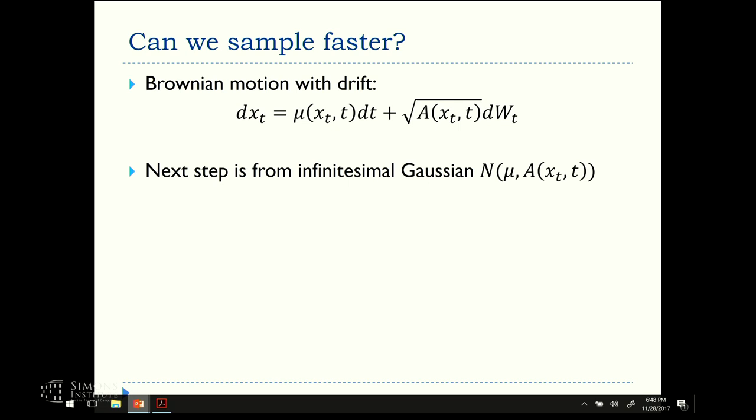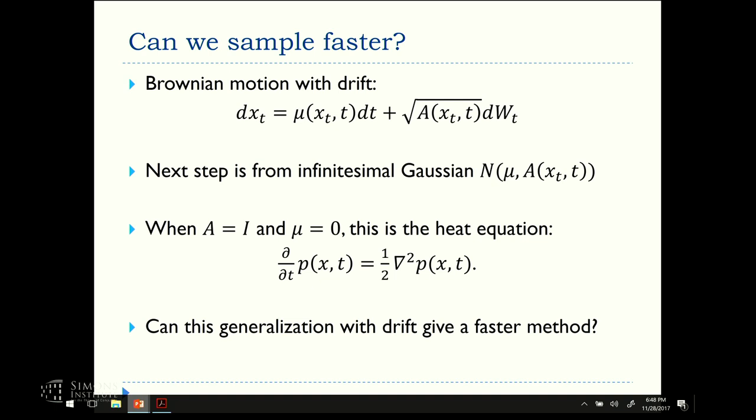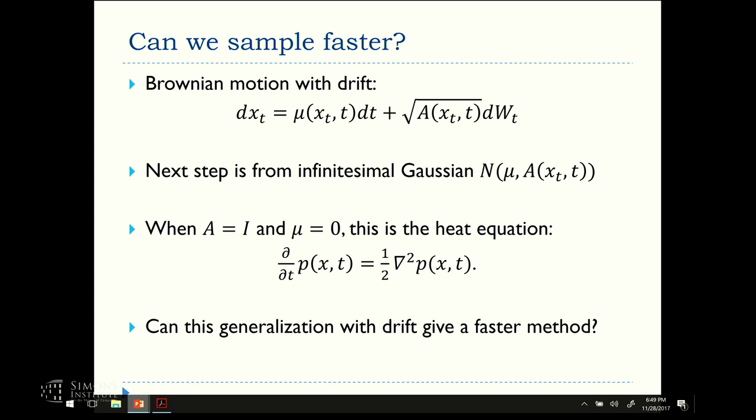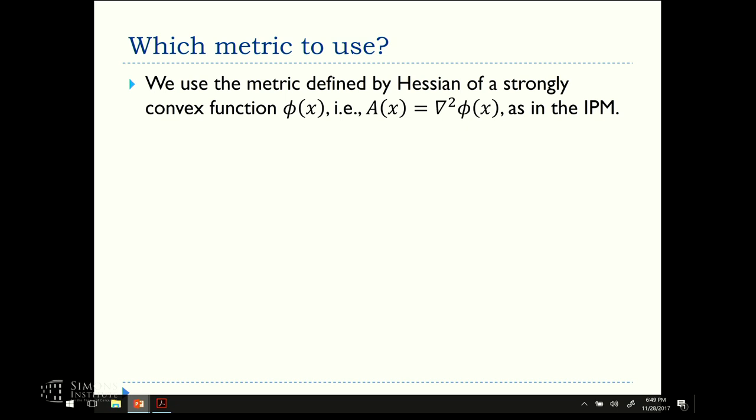When there is no drift, and it's just uniform everywhere, that's the standard heat equation. Now, when we generalize with drift and general metric, can we get a faster method? So, then to do that, we have to choose what metric to use. The drift presumably will be completely determined by the choice of stationary distribution, but we still need to choose what metric. We get this big choice. The one we analyze is the metric defined by Hessian. In some sense, because it's worked well in optimization and something we have some idea how to analyze. But it's an open question as to what's the best metric.